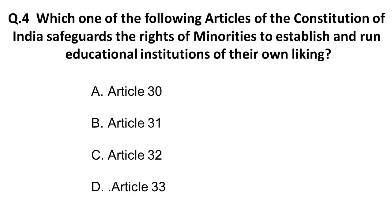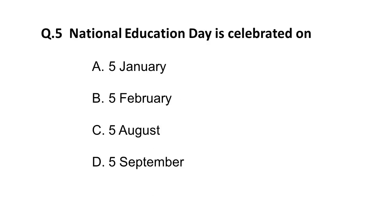The next question: which article of the Constitution of India safeguards the rights of minorities to establish and run educational institutions of their own liking? The options are Article 30, Article 31, Article 32, and Article 33. The correct answer is Article 30. It provides the minority the authority to establish and run educational institutions of their own liking. This is a very important question — most of the time questions will be asked in different manners, but remember Article 30 is the correct answer.